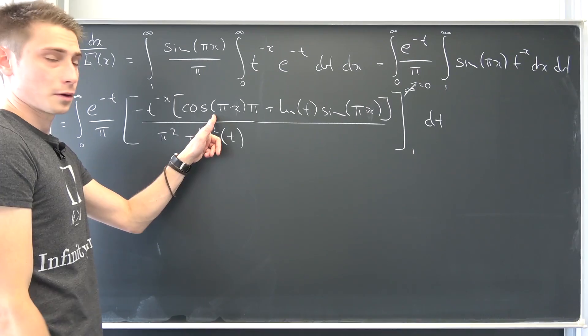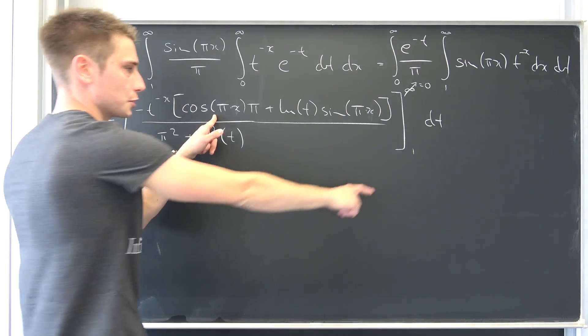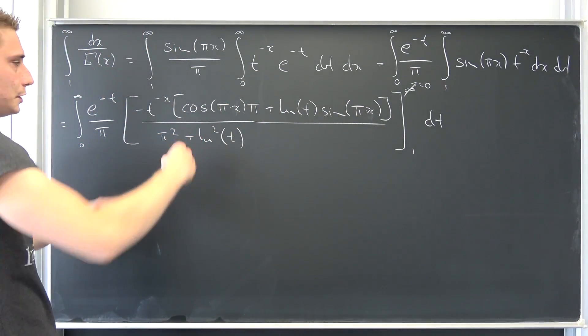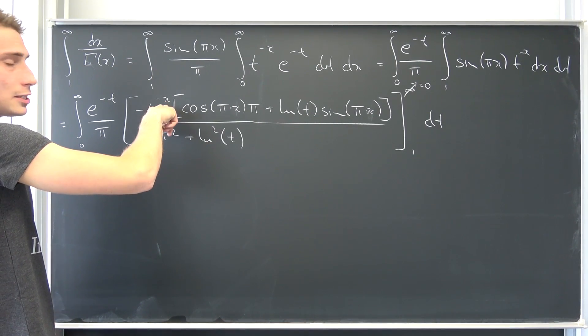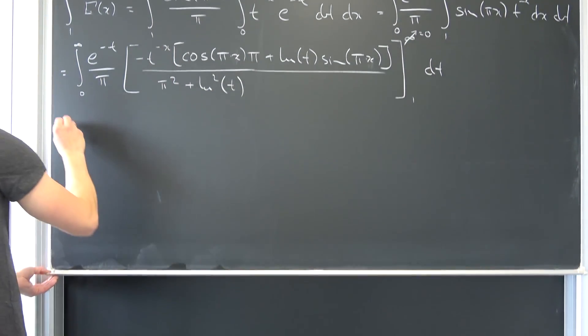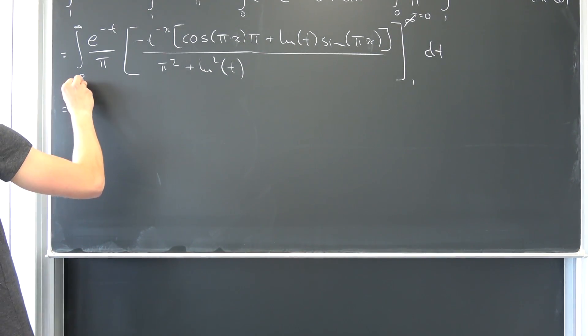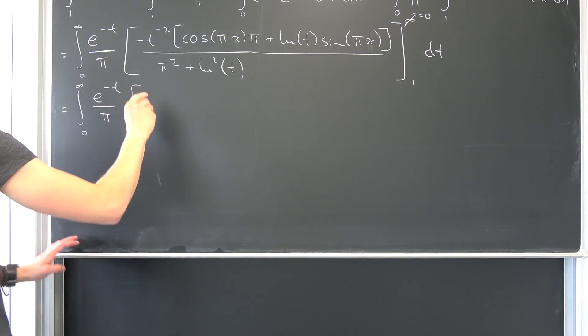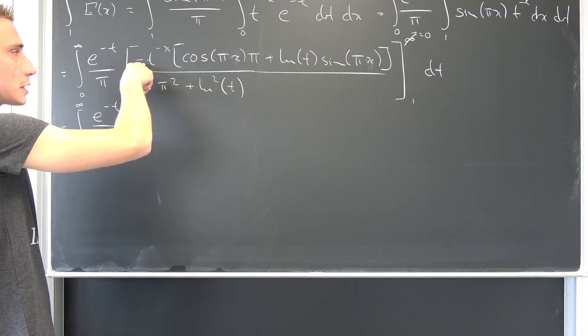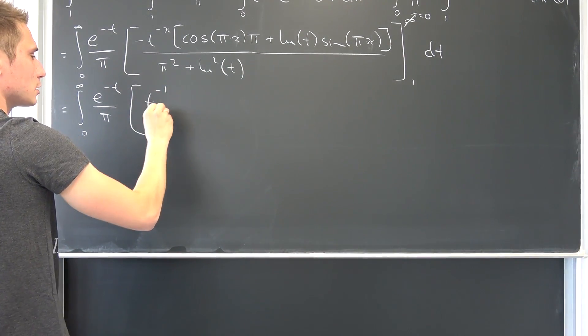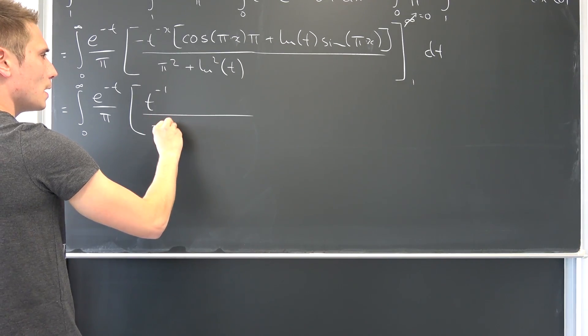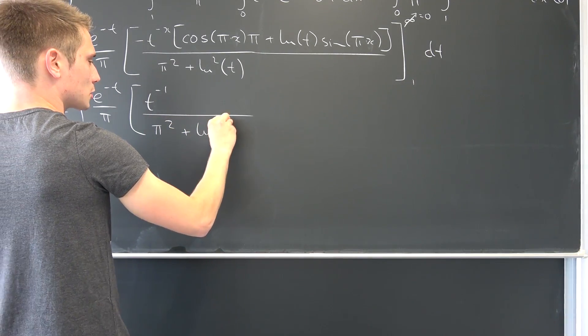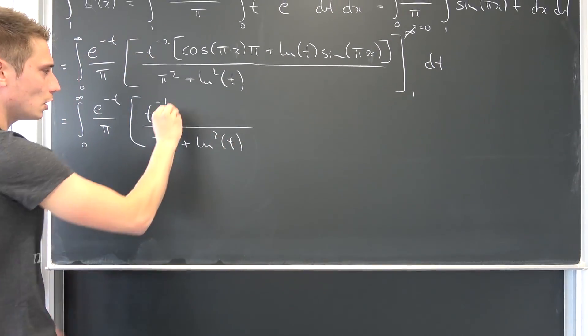Now we are going to plug a one into here. If we plug a one into this thing, we are going to have T to the negative one power. I'm going to write everything out: zero to infinity, E to the negative T over pi, and then second part of integration gets rid of this negative sign. Then we are going to get T to the negative one power over pi squared plus the natural log squared of T.